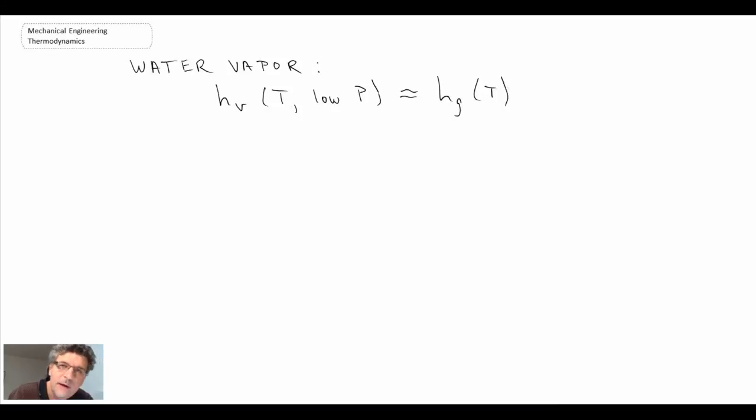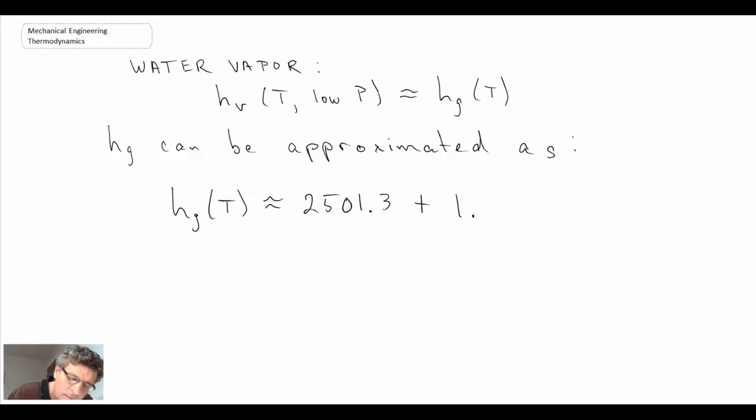If you look in your book, it would vary from book to book, but the value of Hg can be approximated with this equation here. This is again in degrees C, and the units of this are kilojoules per kilogram.